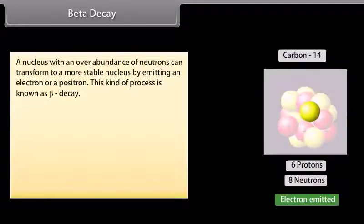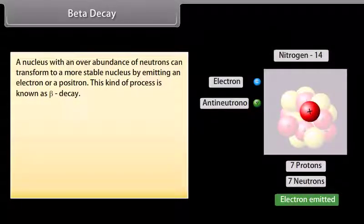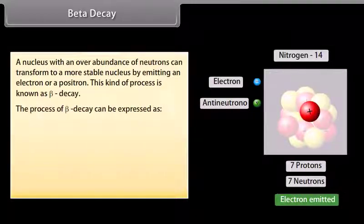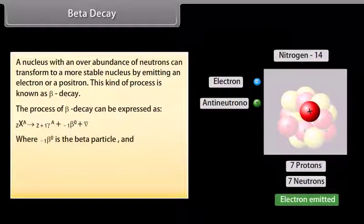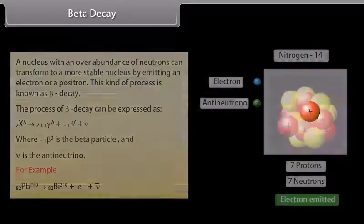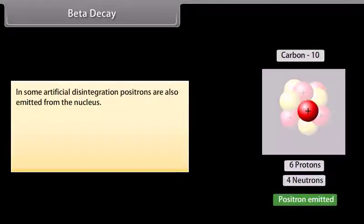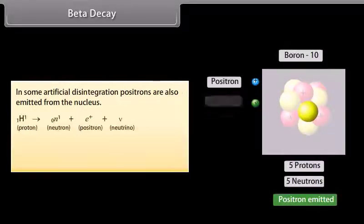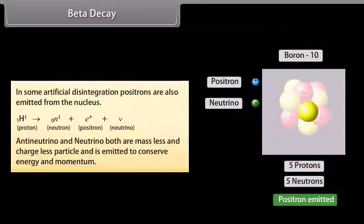Beta decay. A nucleus with an overabundance of neutrons can transform to a most stable nucleus by emitting an electron or a positron. This kind of process is known as beta decay. This process of beta decay can be expressed as, where is the beta particle and is the anti-neutrino. In some artificial disintegration, positrons are also emitted from the nucleus. Anti-neutrino and neutrino, both are massless and chargeless particle and is emitted to conserve energy and momentum.